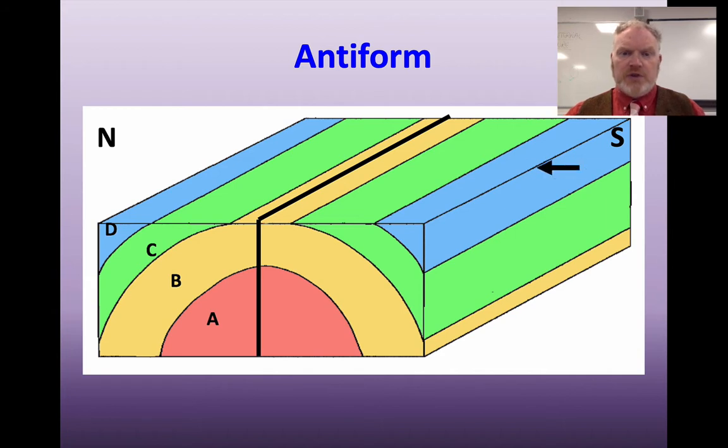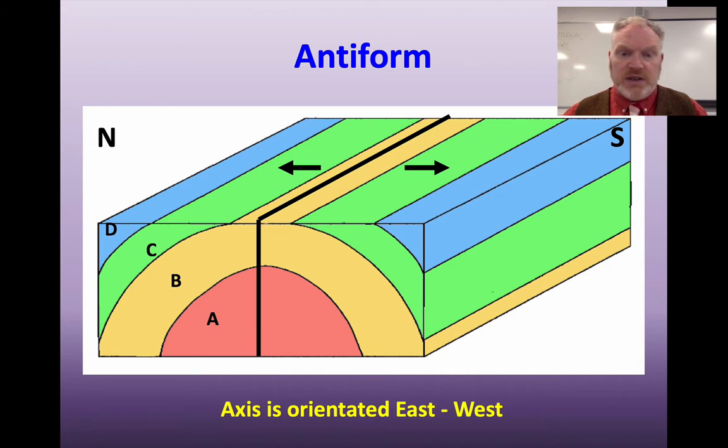Then if we're drawing the dip arrows on the surface, they go like that. Notice that the dip arrows in an antiform are pointing away from each other. That's how we recognise a fold from the dip arrows. They're pointing in different directions. And in an antiform, those arrows will point away from each other. That axis is oriented from east to west. We've got north on the left, south on the right, so the axis must be going east-west.